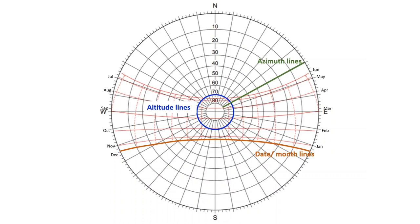Now these curved lines correspond to the date or month lines. There is a line for each month of the year. And the dotted lines give the hours, the time when the sun rises till the sun sets for each month of the year.